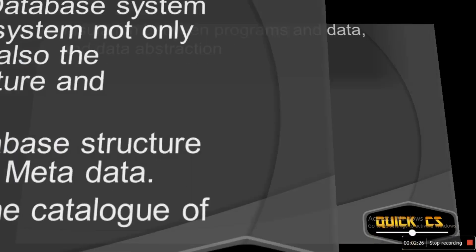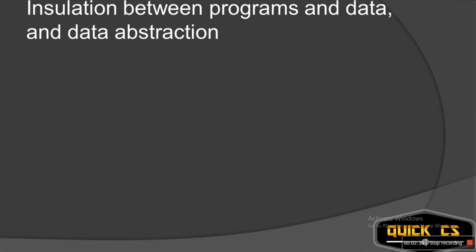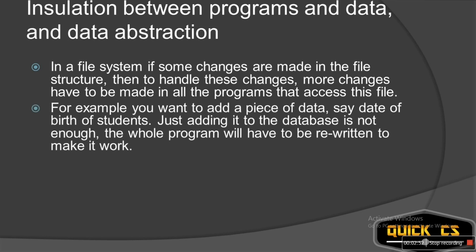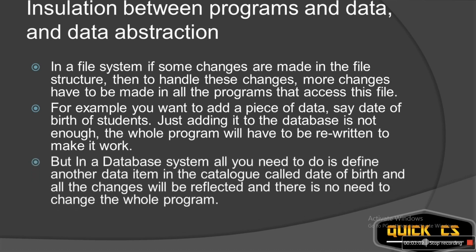The second characteristic of DBMS approach is known as insulation between programs and data and data abstraction. In a file system, if you want to make some change in the database, you have to make this change in the entire program. But it's not the same case in DBMS. In DBMS, suppose you want to add another data type like date of birth — all you have to do is go to the catalog and add it, and the changes will be reflected in the entire program. You don't have to edit the entire program. That's why it's called insulation between programs and data and data abstraction.